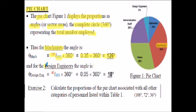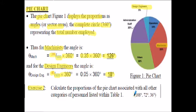If we look at the design engineers category, there were 40 design engineers at the company out of the 800 staff. So multiplying 40 upon 800 by 360, we will get 18 degrees. So 18 degrees represents design engineers. I'll let you calculate the other sectors for the various job categories - the answers are given here.